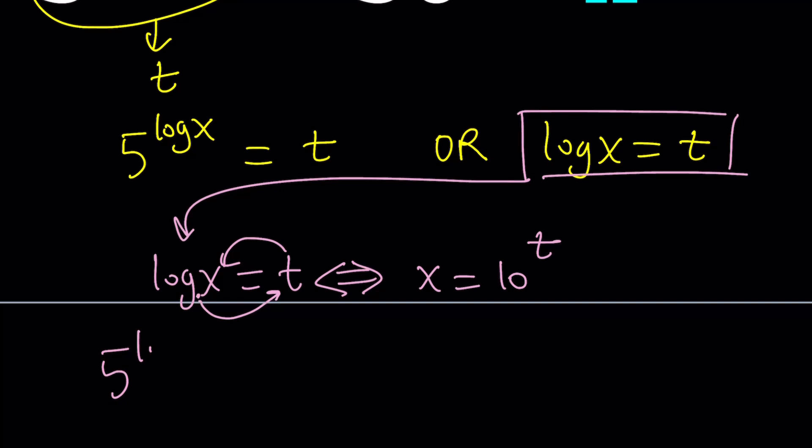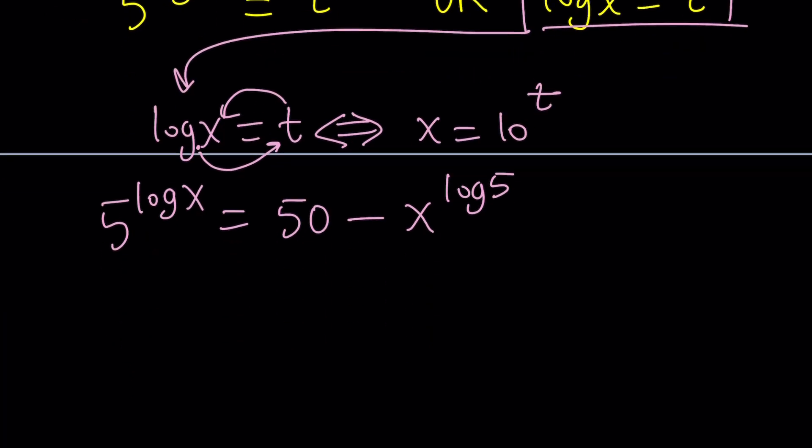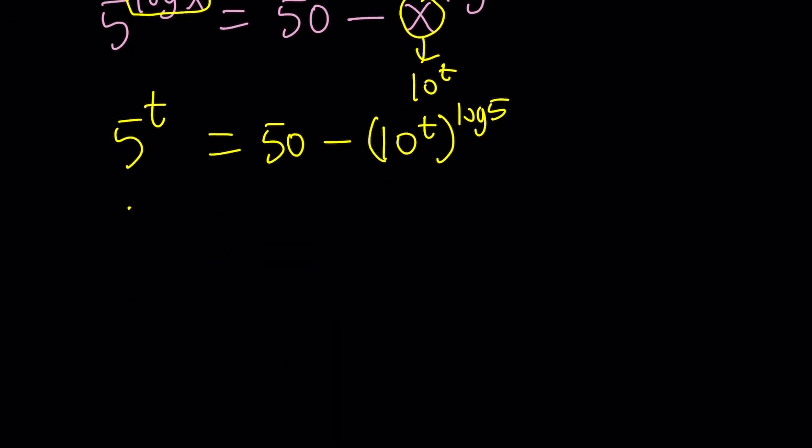And we can go ahead and plug it in. So remember, we had 5 to the power log x equals 50 minus x to the power log 5. Now, we're going to replace log x with t, right? And x with 10 to the power t. And that's going to be pretty interesting. Let's do it. So we get 5 to the power t equals 50 minus 10 to the power t to the power log 5. And you might be wondering what this is going to look like, right?